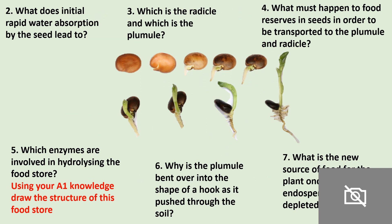What does initial rapid water absorption by the seed lead to? This basically starts the mobilisation of food reserves within the seed. It also ruptures the testa, which means that the plumule — the growing part of the shoot — is able to come out of that seed coat.